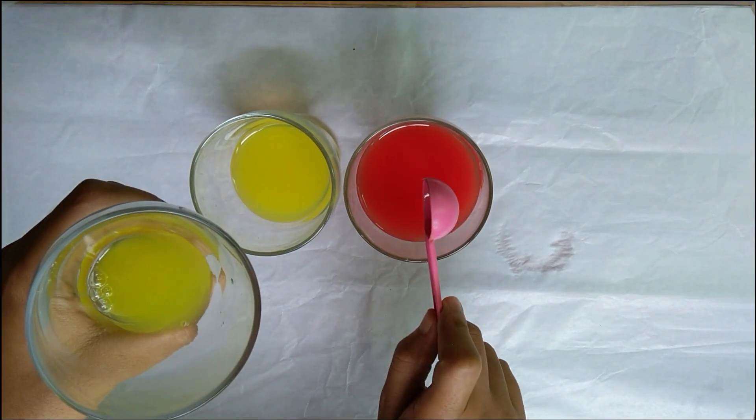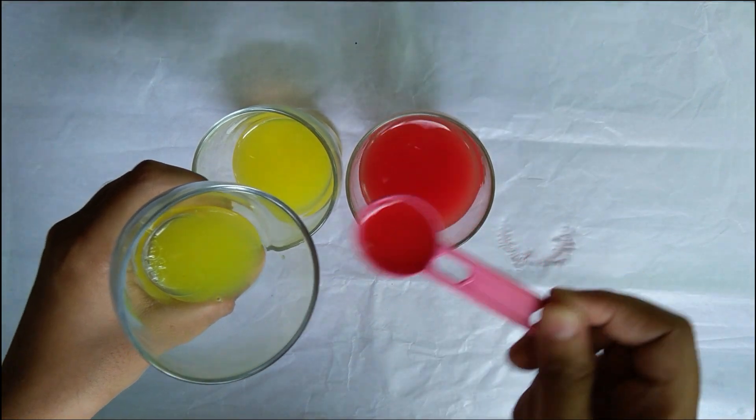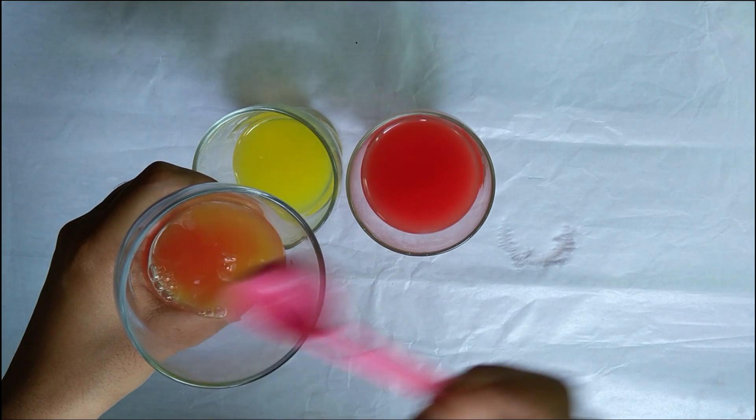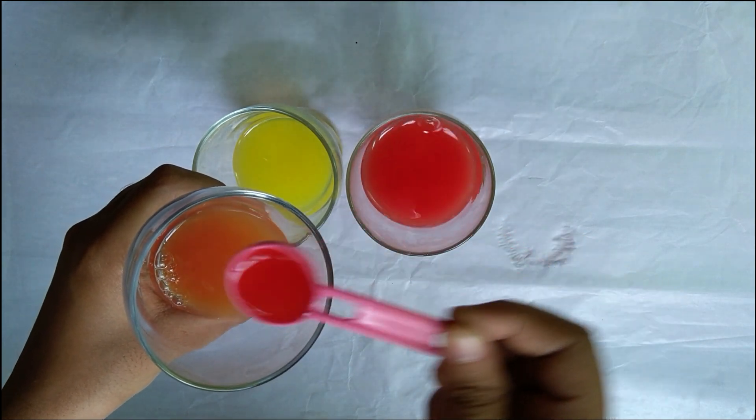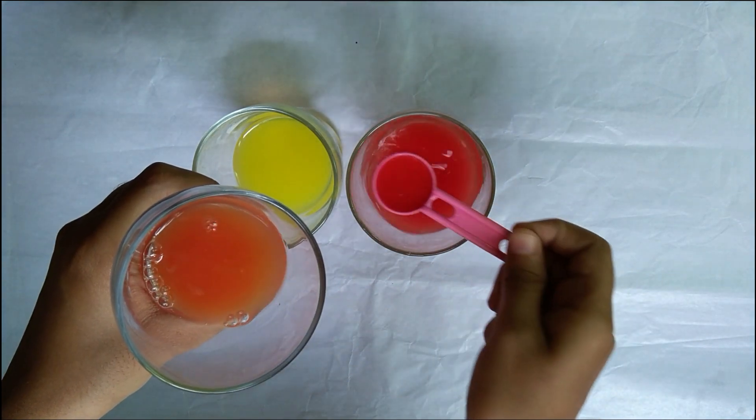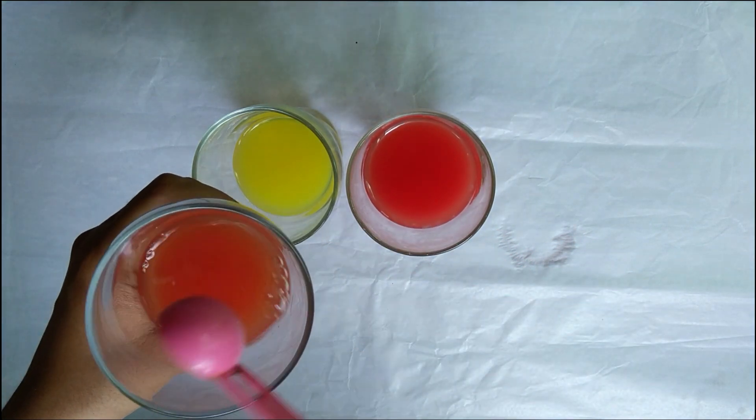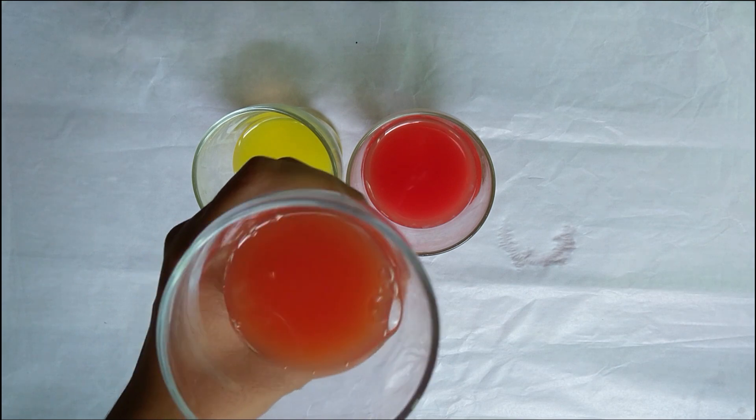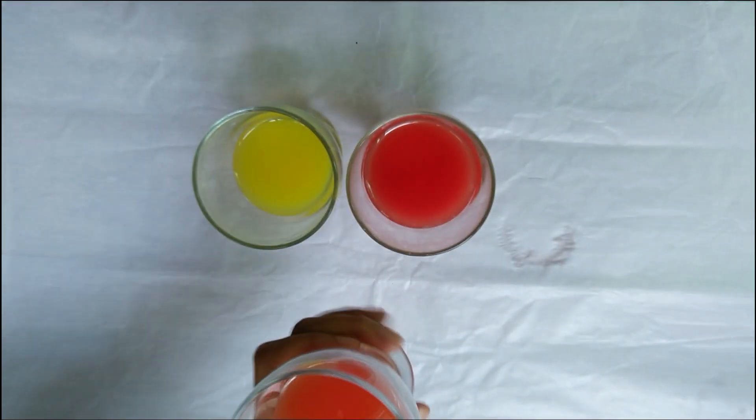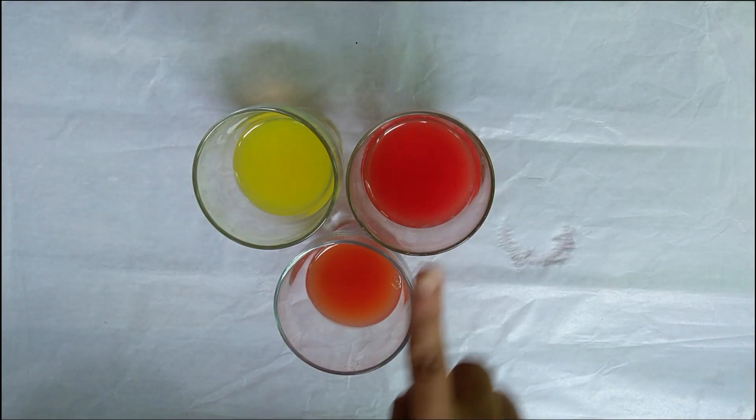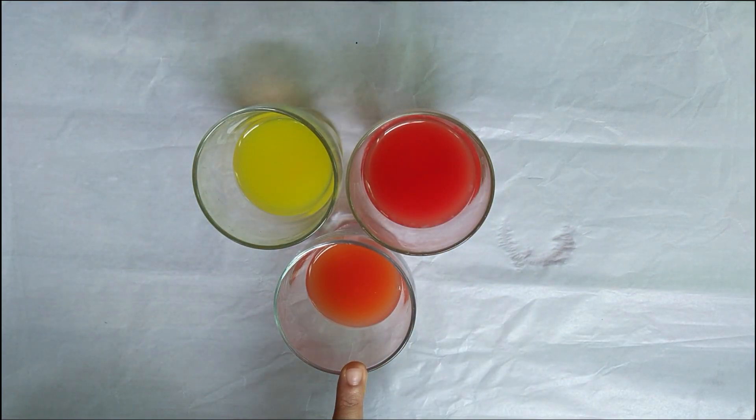When you start putting red color in yellow color, we will see that the color starts changing. And finally, we have got a mixture of orange color. That means students, yellow and red gives us orange.